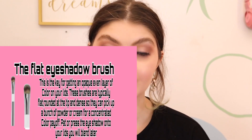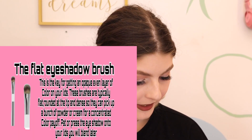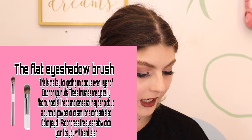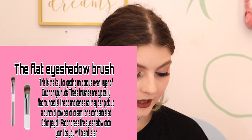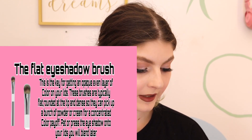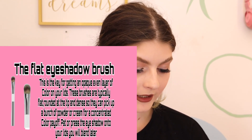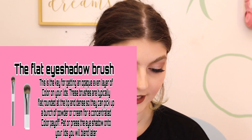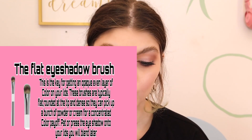The flat eyeshadow brush is key for getting an opaque, even layer of color on your lids. These brushes are typically flat, rounded at the tip, and dense — so they can pick up a bunch of powder or creams to concentrate the color payoff. Pat or press the eyeshadow onto your lid and then blend it later. It's kind of like the transition color brush.